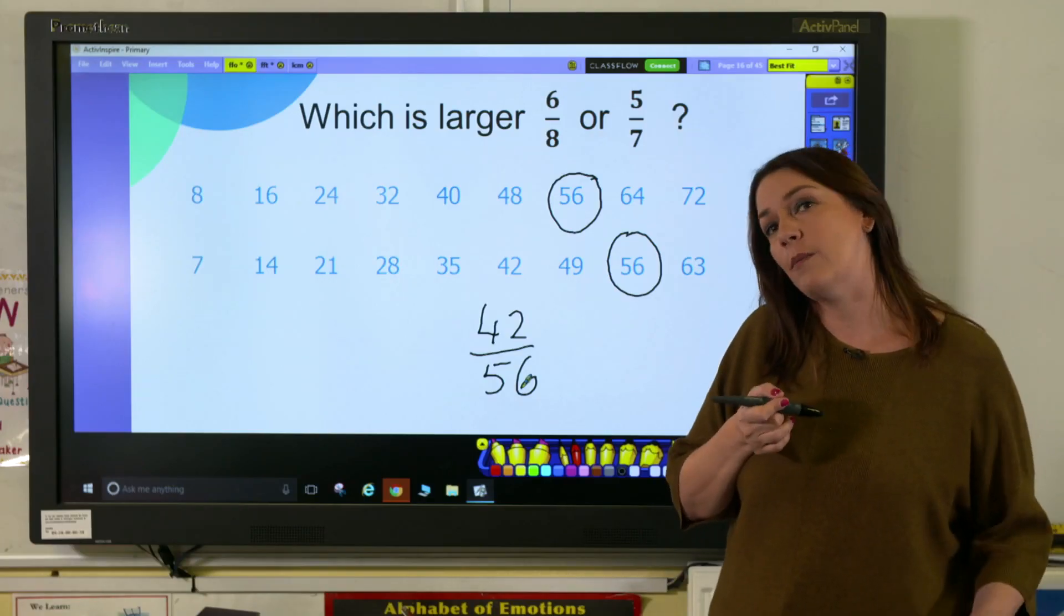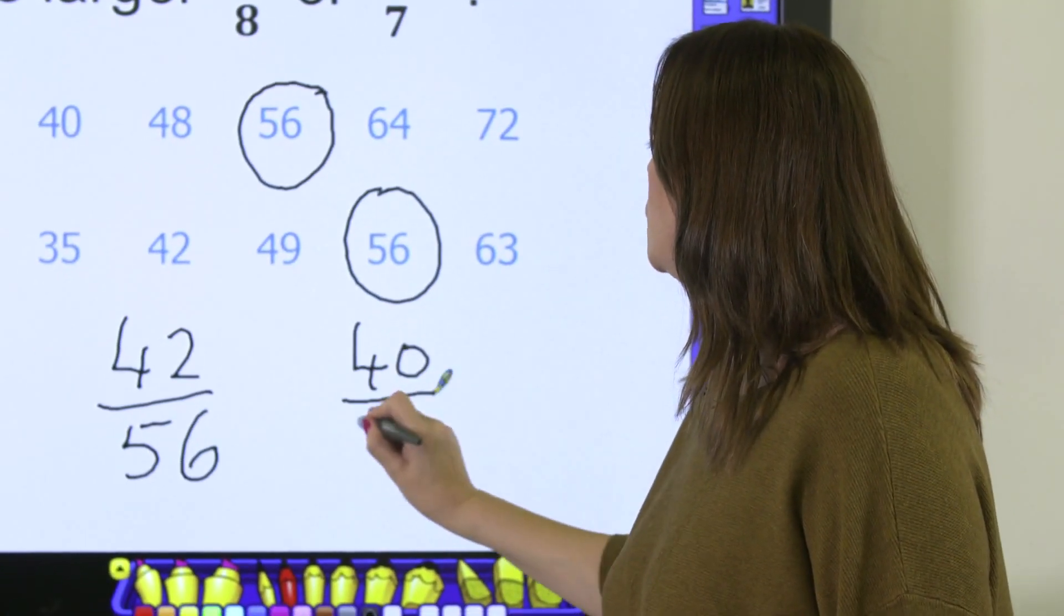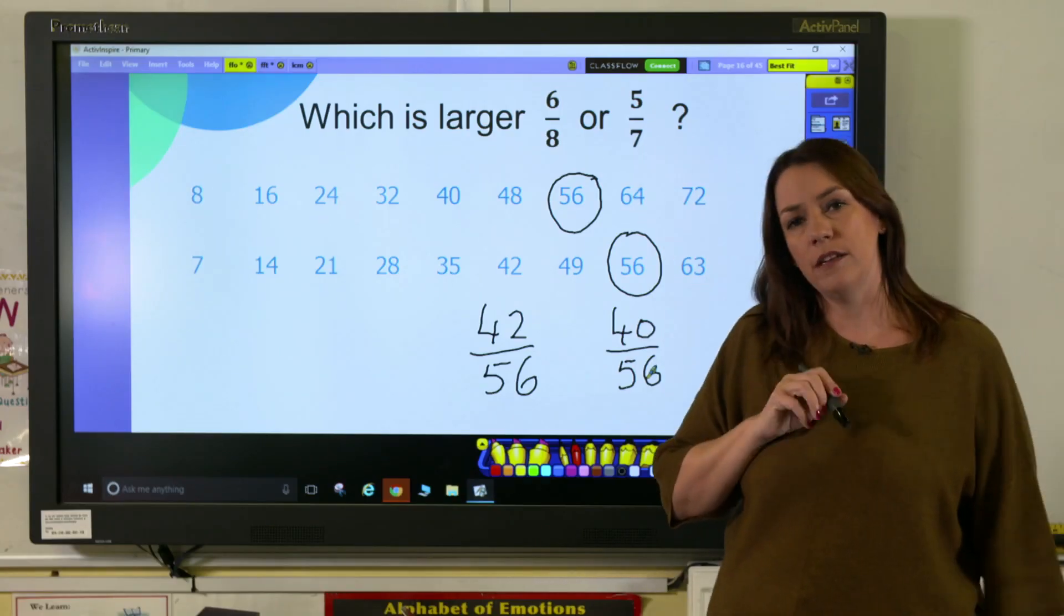And then the same with the 5/7. This time I need to multiply the numerator by 8. 5 times 8 is 40, so I have 40/56. So we can see that 6/8 is actually the larger fraction.